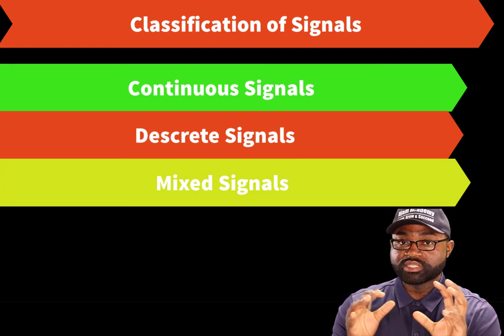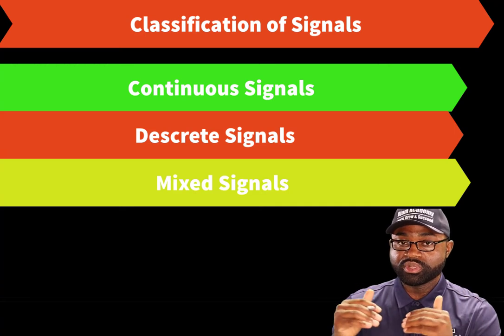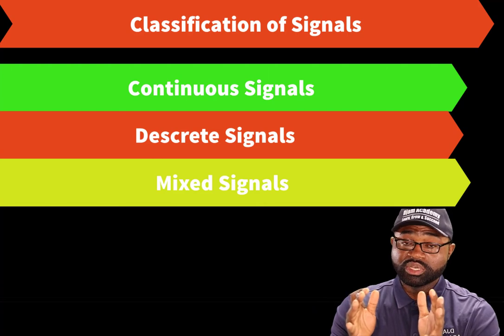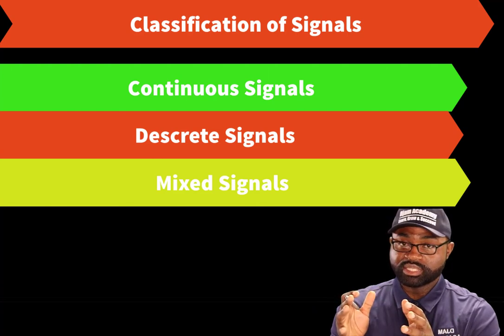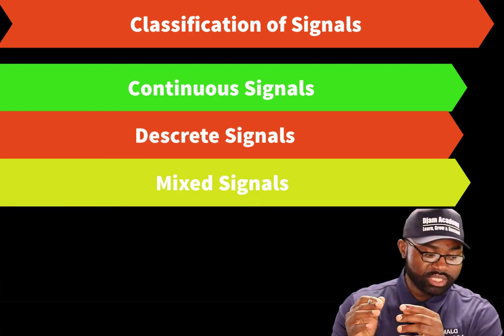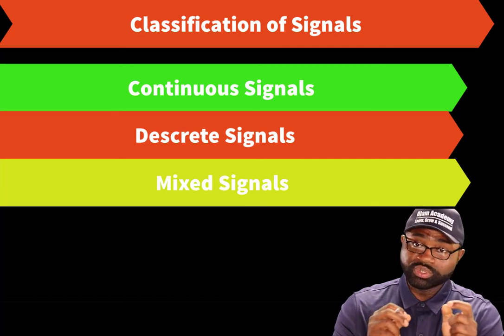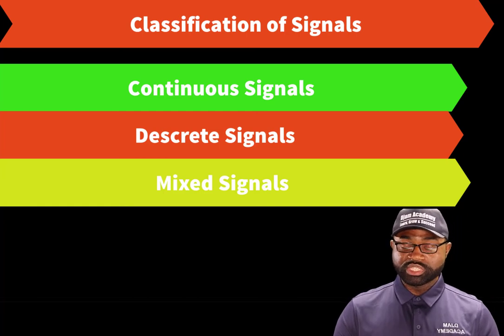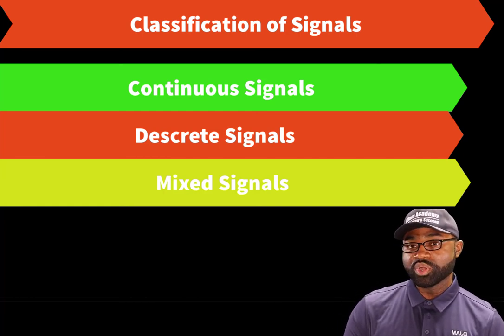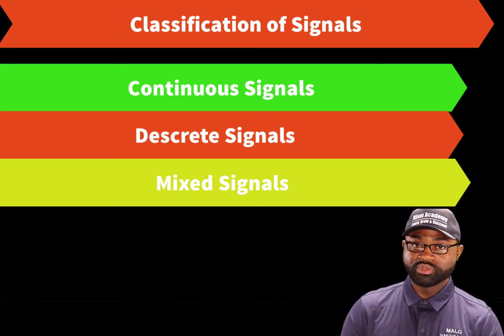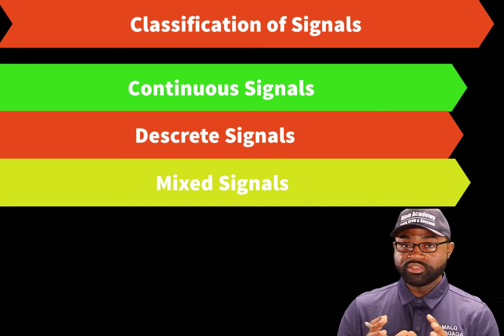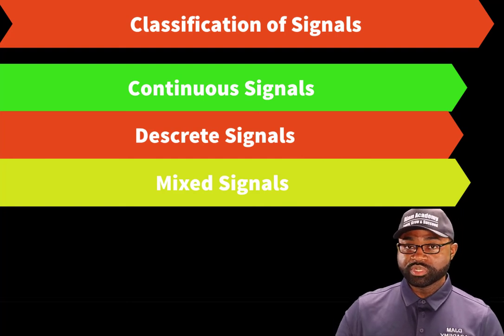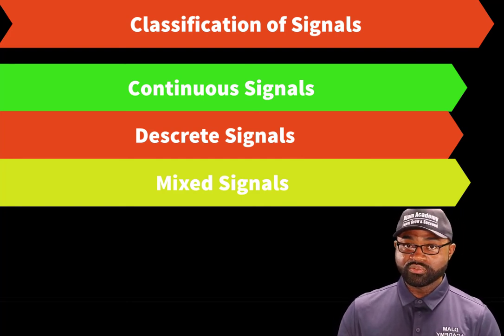With respect to medical imaging physics, we will classify signals in three broad categories: continuous signals, discrete signals, or mixed signals. In general, a signal is represented by a function of one or two independent variables that contains information about the behavior or nature of a particular physical phenomenon.